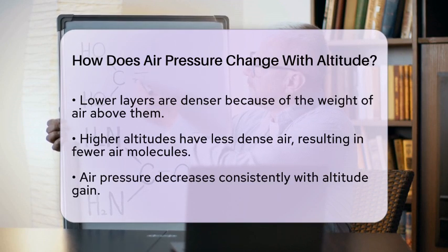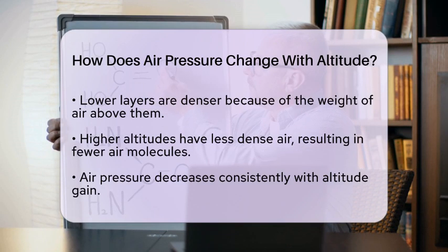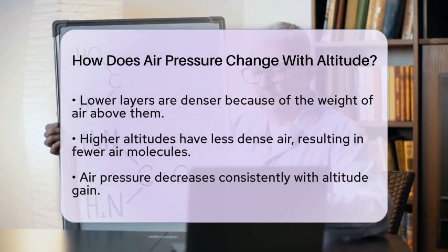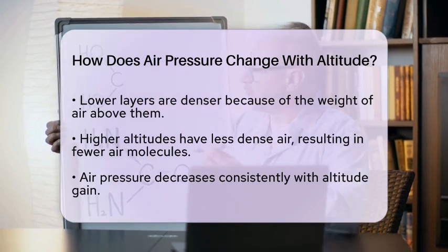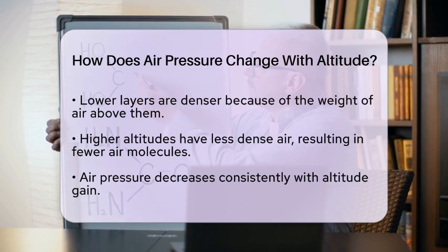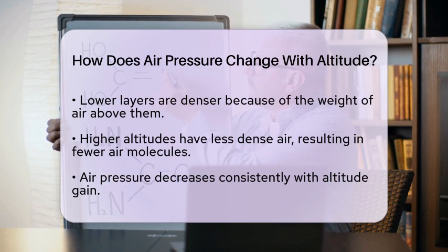For every increase in altitude, air pressure decreases at a consistent rate. On average, air pressure decreases by about 1 inch of mercury for every 1,000 feet of elevation gain. This means that as you climb higher, the air becomes thinner, making it more challenging to breathe.